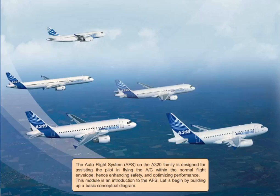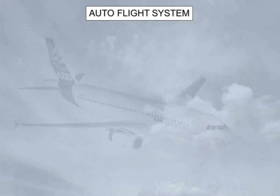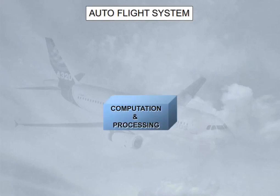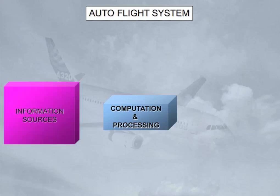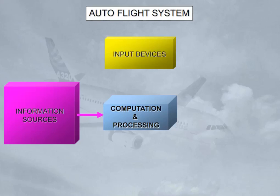Let's begin by building up a basic conceptual diagram. The AFS could be represented as four main sections. At the heart of the system is a computation and processing section — the brain. The central processing section has access to several information sources. The pilots have access to the central processing section via input devices. Finally, after computation and processing, commands are provided to output devices.